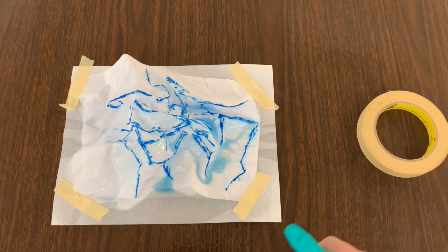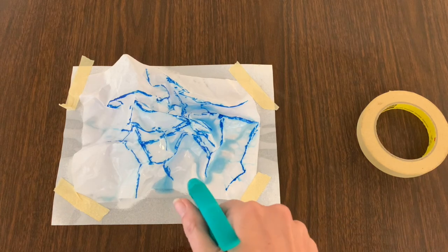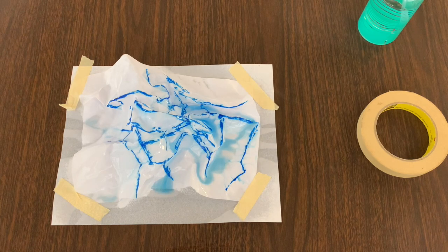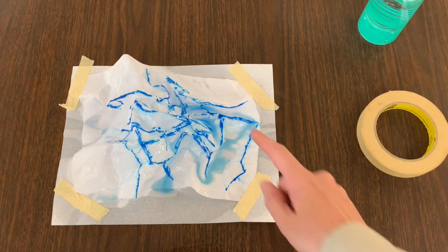As you spray and the water moves, how did the rainfall travel or move across the land? How did it move like you expected? How did it move differently?